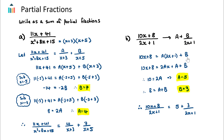Expanding: 10x + 8 = 2Ax + A + B. Comparing coefficients of x on both sides: 10 = 2A, so A = 5. Comparing the constant terms: 8 = A + B, and since A = 5, B must equal 3. Therefore (10x + 8)/(2x + 1) = 5 + 3/(2x + 1).